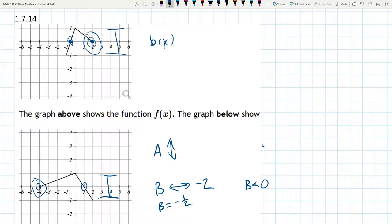If the vertical stretch was negative, the second graph would look something like that. It would be a v opening upwards, not downwards. So there is no vertical stretch.